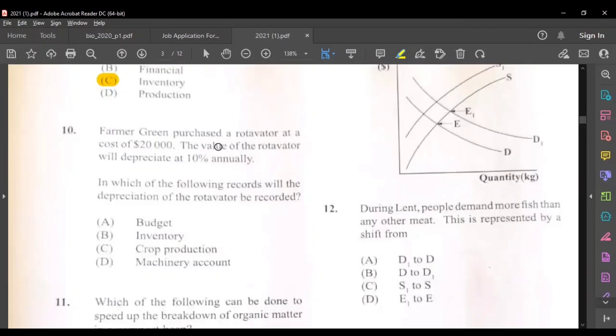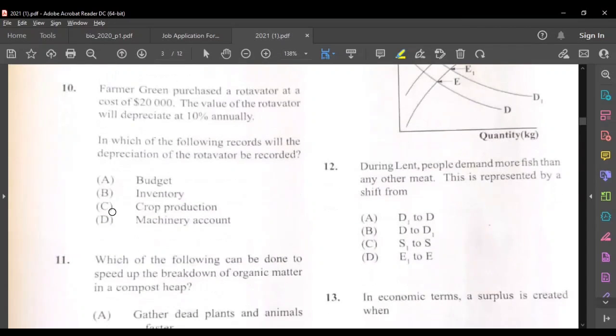Farmer green purchases a rotavator at a cost of twenty thousand dollars. The value of the rotavator will depreciate at ten percent annually. So which of the following records will the depreciation of the rotavator be recorded? The answer for this question is crop production record.